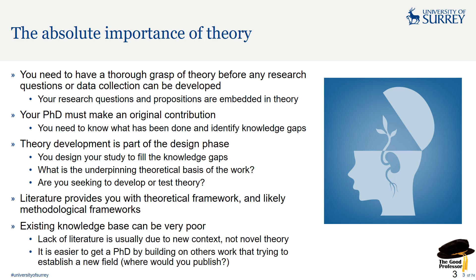Existing knowledge can be very poor. A lack of literature is usually due to new context, not novel theory. It's easier to get a PhD by building on others' work than trying to establish a whole new field — if you establish a new field, where are you going to publish it? So really make sure you know what theory you're going to build on. Read extensively and think: there's a gap in theory and I'm going to work in that space, then see if this approach is suitable for you.